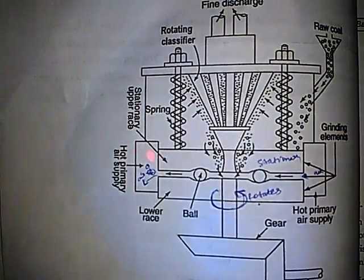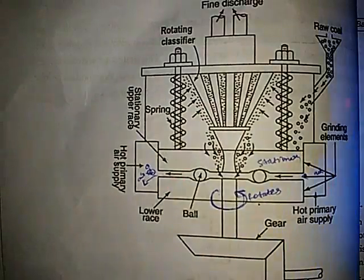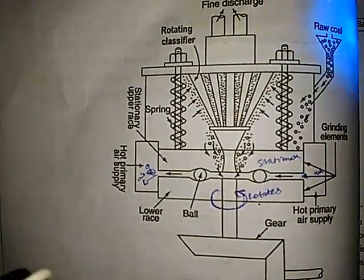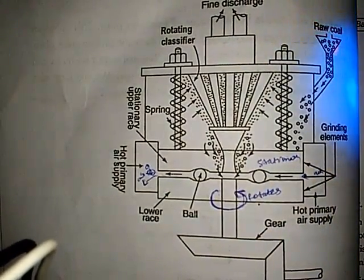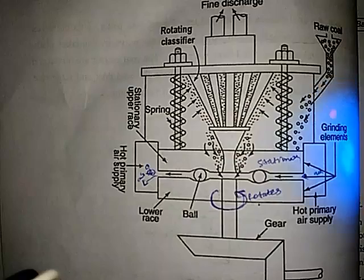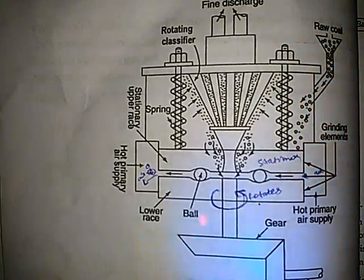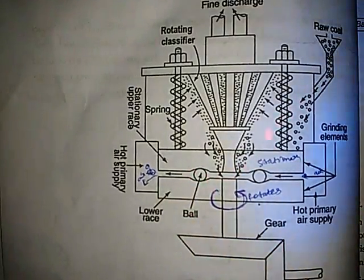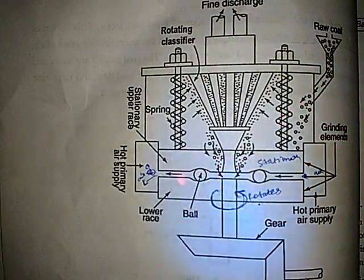This ball and mill pulverizer consists of a feed input for entering the raw coal into the pulverizer. This funnel is used to feed the raw coal into the pulverizer. After that the raw coal is moved to this portion, that is the portion in between the races.